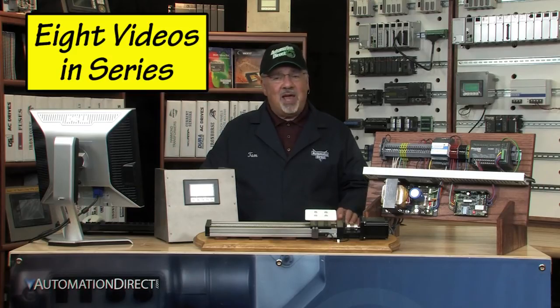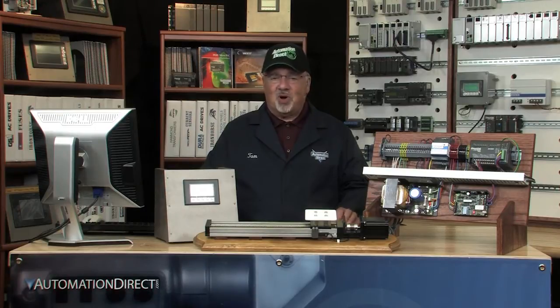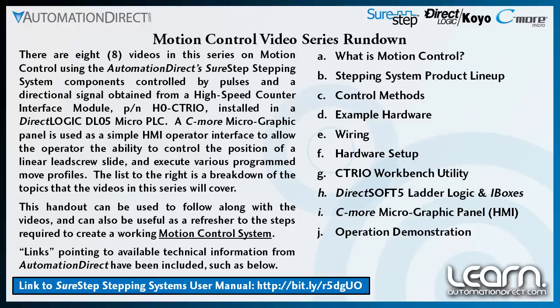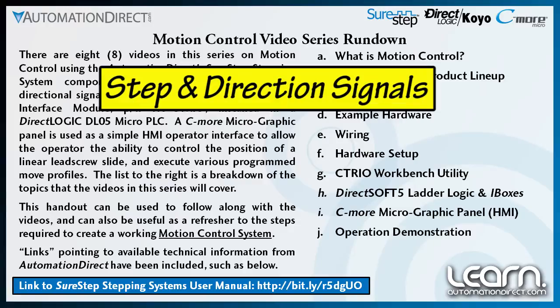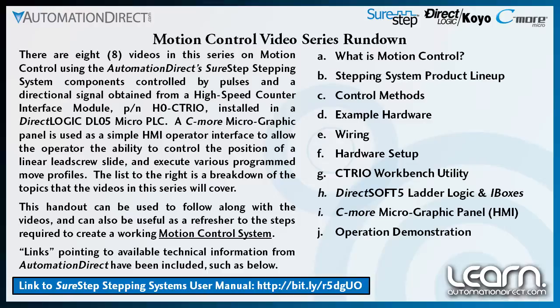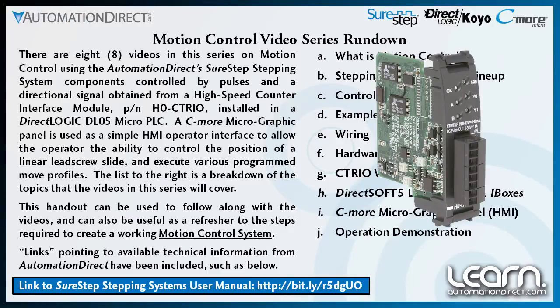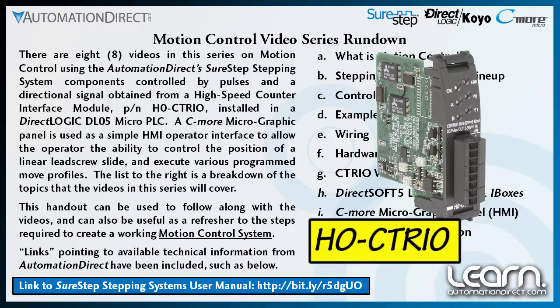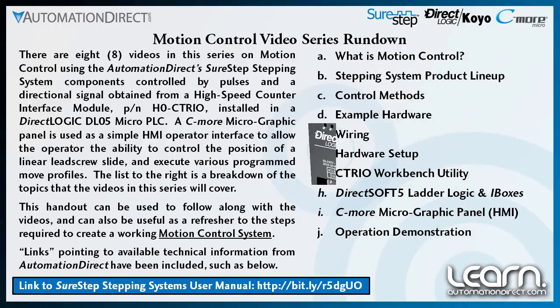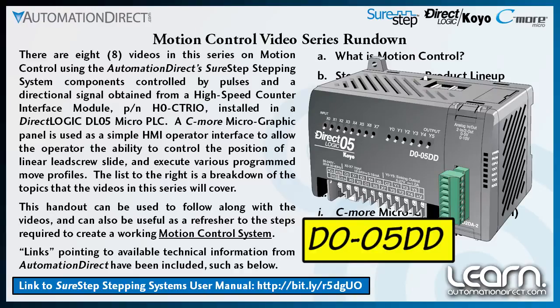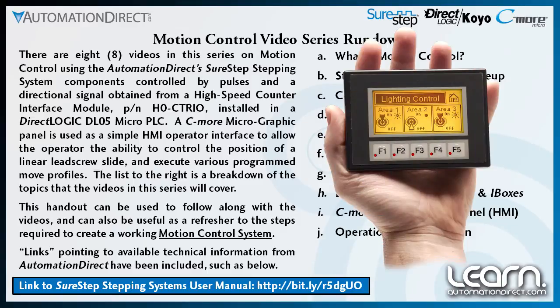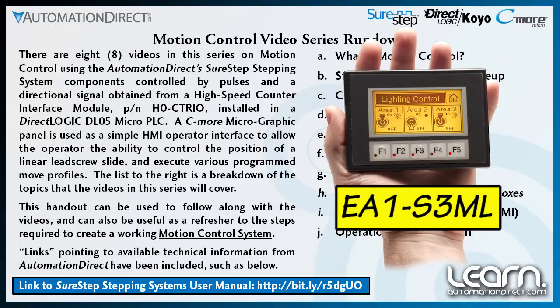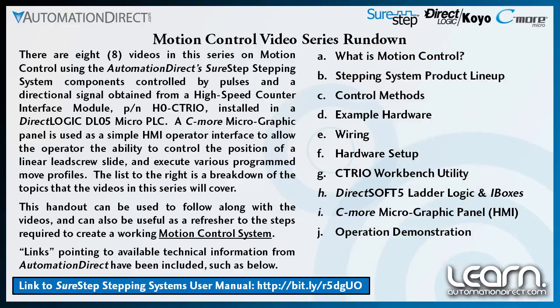This motion control video series will include 8 videos. I have broken the series down into topics that will allow you the opportunity to either view the entire series from start to finish, or view just the topics that are relevant to your needs. The SureStep stepping system drive I have chosen to use in my demonstration is typically commanded by a string of pulses representing the motor's rotary position and also a rotary directional signal. I will obtain these signals from a high speed counter interface module, AutomationDirect's part number H0-CTRIO, which is plugged into an expansion slot of a DirectLogic DL05 microprogrammable logic controller. I will use a Seymour micrographic panel as my human to machine interface, typically abbreviated HMI, also sometimes called an operator interface. The Seymour panel will communicate to the PLC and allow me to select the motion profile that I want executed.